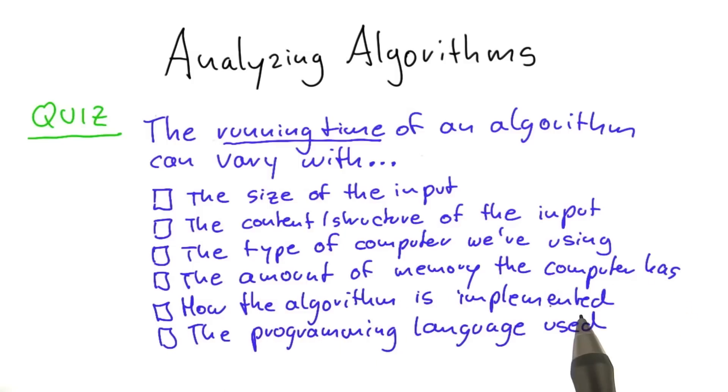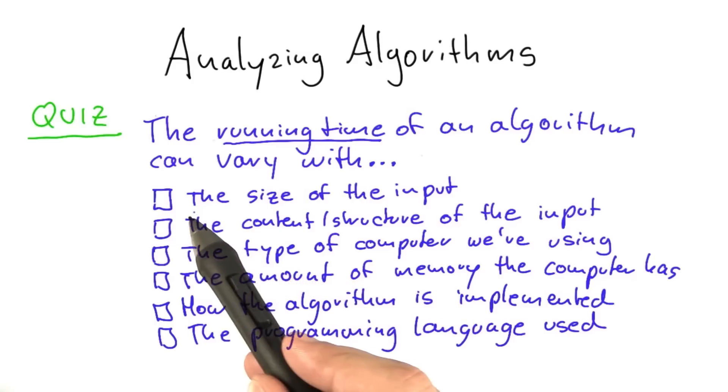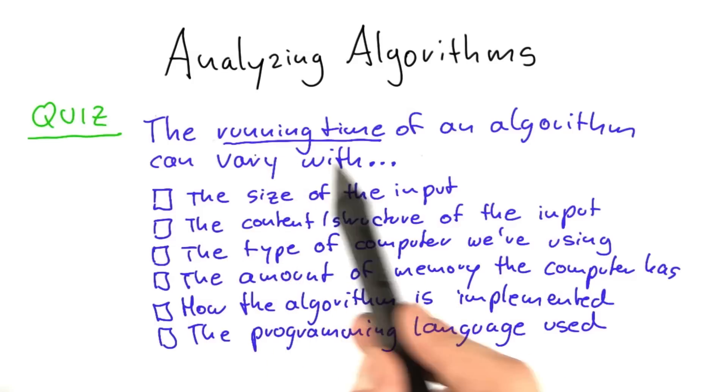And six, the programming language that we're using to implement the algorithm. I want you to think of each of those six aspects and then make a check mark where you think that this aspect can influence the running time of an algorithm.